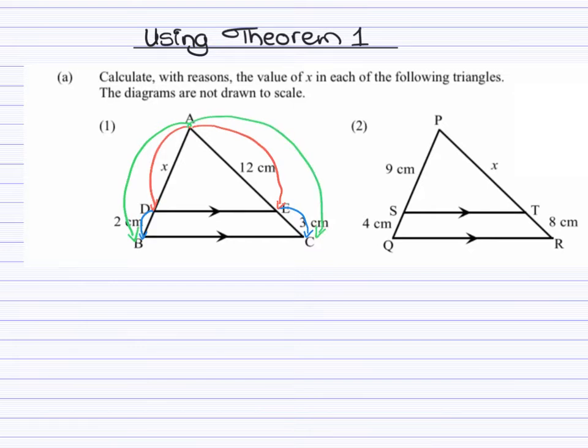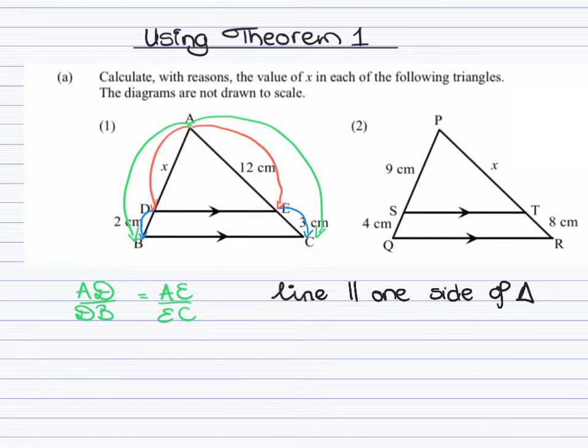Let's go ahead and begin calculating the value of x. So the first theorem, theorem 1, states that a line drawn parallel to one side of a triangle divides the other two sides proportionally. So based on that, I then write my first statement, which is AD divided by DB. I know that will be equal to AE divided by EC. The reason you will use there is line parallel to one side of triangle. This is one of the abbreviated reasons that is acceptable.